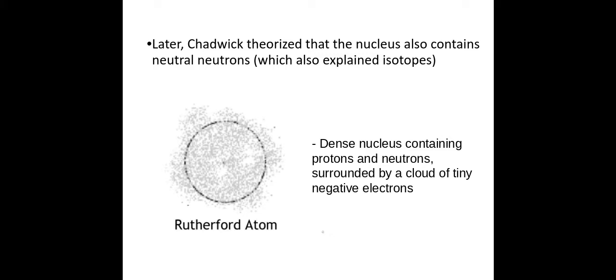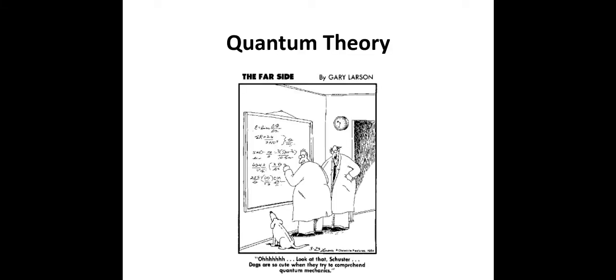Chadwick theorized there's another thing in the nucleus with no charge — those are neutrons — to explain isotopes. So a Rutherford atom consists of a very, very small, very dense, positively charged nucleus with electrons around it. We didn't say much about what those electrons are doing, but there was a nucleus. This brings us to the next part — those electrons themselves — and it takes a bit of background to figure out how Bohr got to his idea. This is our quick introduction to quantum theory.